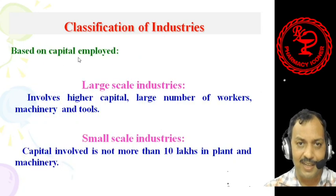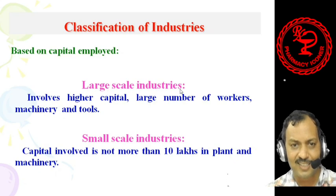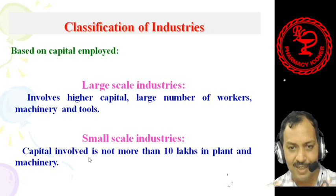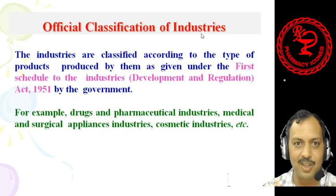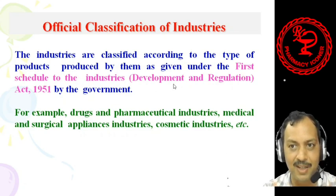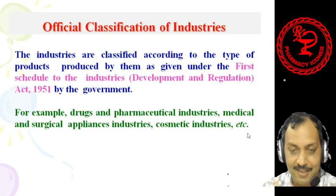On the basis of capital employed or invested, industries are classified into large scale industries and small scale industries. Large scale industries generally involve higher capital, large numbers of workers, machinery, and tools. Small scale industries involve capital not more than 10 lakhs in plant and machinery. As per the official classification, industries are classified according to the type of products produced under the First Schedule to the Industries Development and Regulation Act 1951 — for example, drugs and pharmaceutical industries, medical and surgical appliances industries, cosmetic industries, etc.